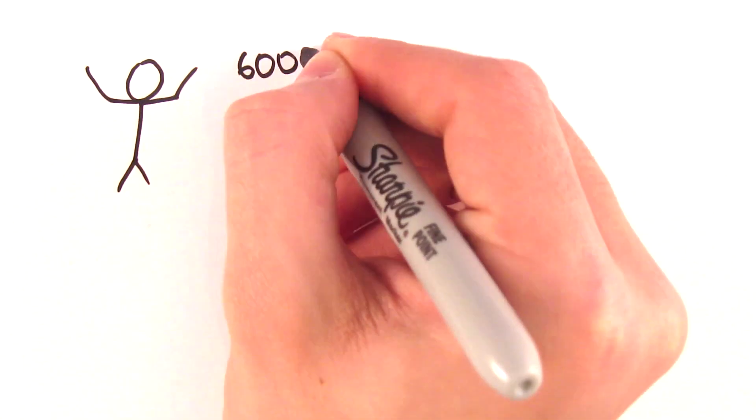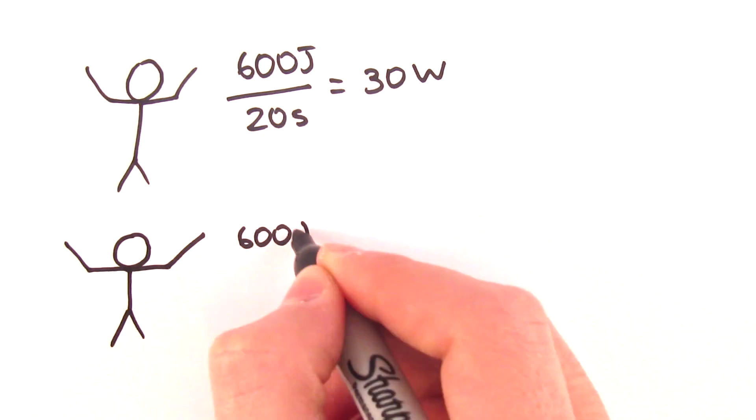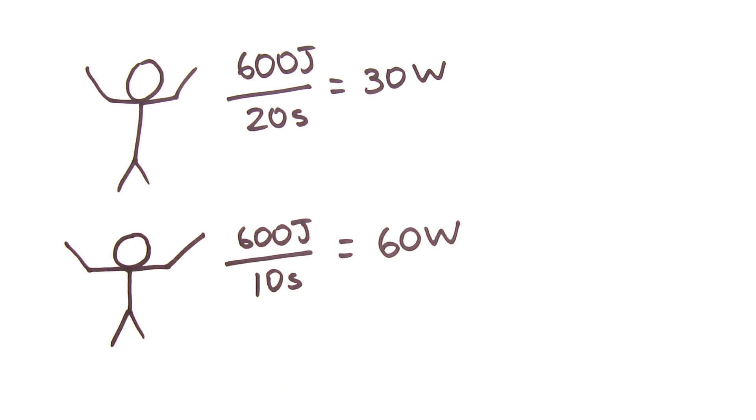You can calculate the power in watts by dividing the work done by the time in seconds. In this case, the first guy pushed the box with a power of 30 watts and the other guy pushed it with a power of 60 watts.